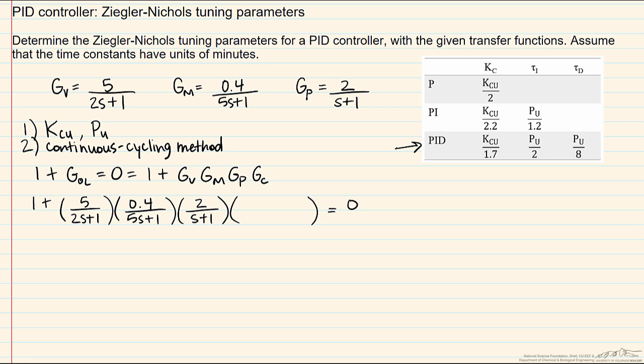The important point here for the controller is that even though we are looking for a PID controller, we have to assume that when we are doing this analysis that gc equals kc. The reason why is because the continuous cycling method, which is used for the ultimate gain and the ultimate period, runs on only a P-only controller. Therefore in order to complete that analysis we have to assume that our controller is as such.